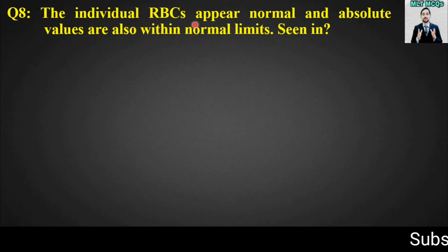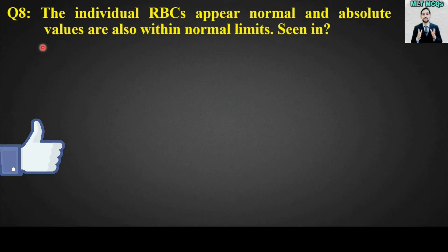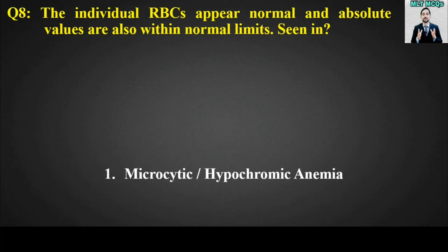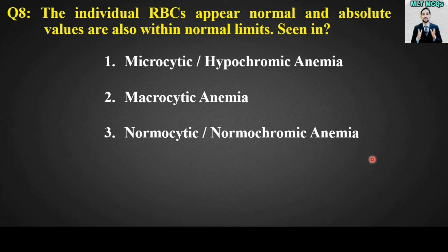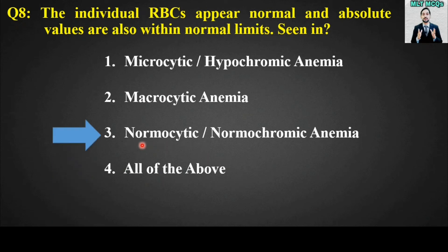MCQ number eight: The individual red blood cells appear normal and absolute values are also within normal limits — this is seen in which type of anemia? Options include microcytic hypochromic anemia and normocytic normochromic anemia. The right answer is option number three — normocytic normochromic anemia.